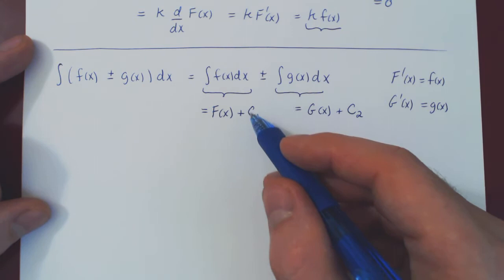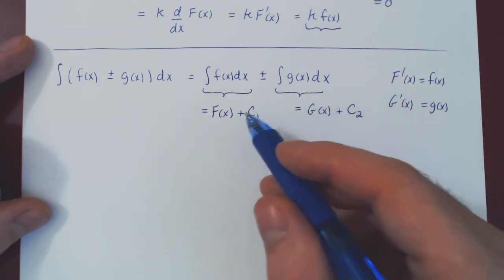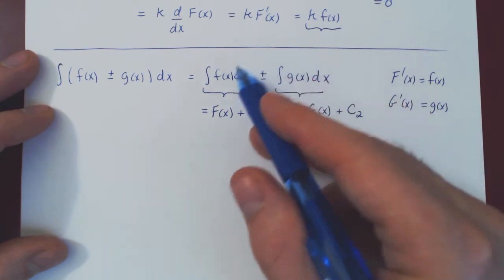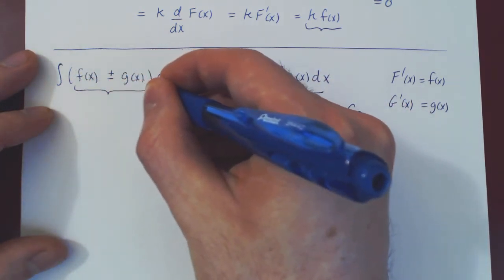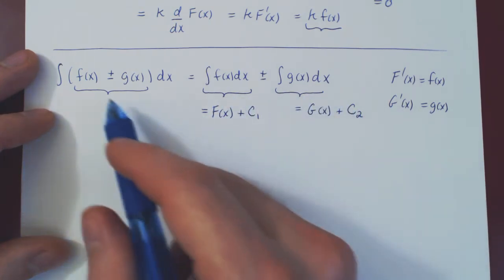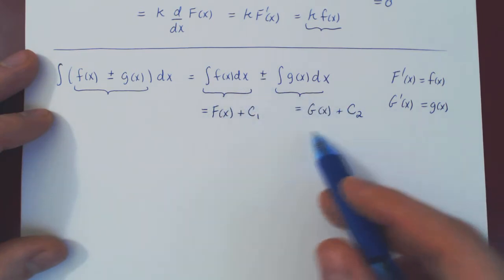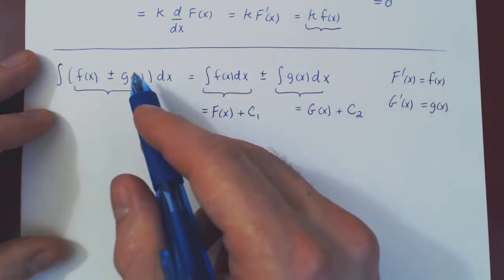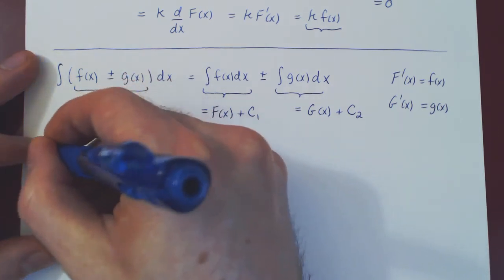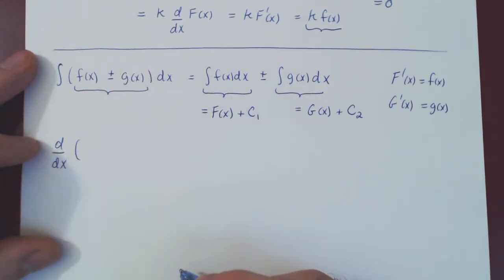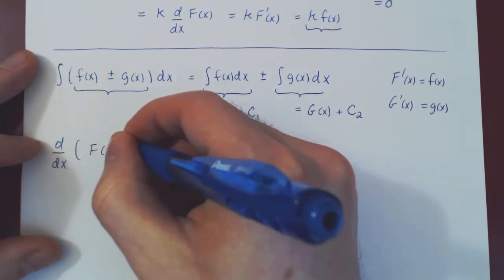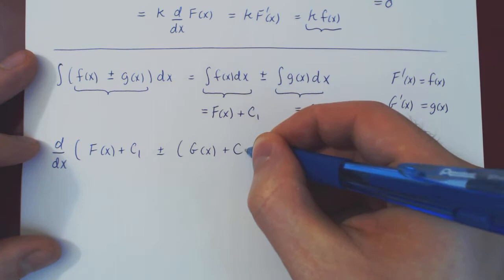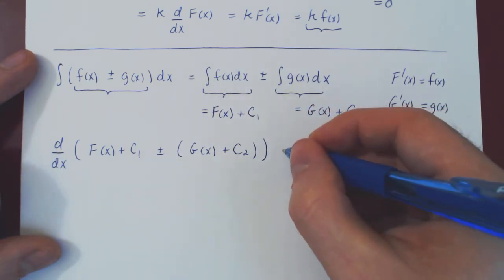We use c1 and c2 because both are arbitrary constants and they could be different. Our answer is supposed to be the anti-derivative of f of x plus or minus g of x. So if we differentiate our answer — uppercase F plus c1, plus or minus uppercase G plus c2 — we should get back the original function.